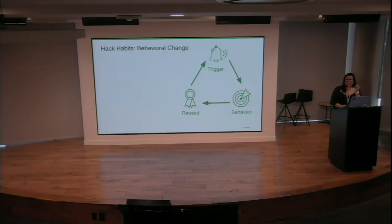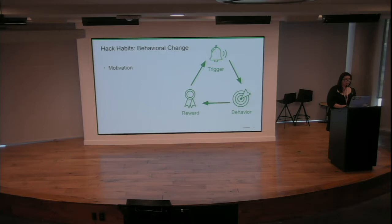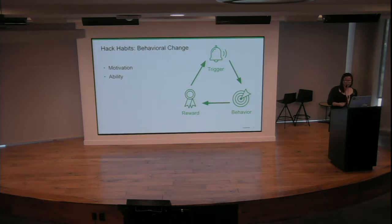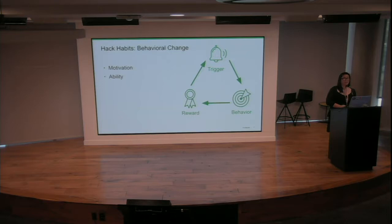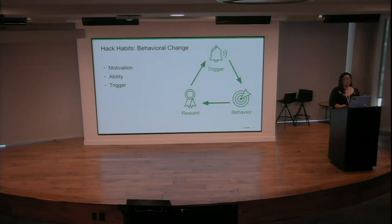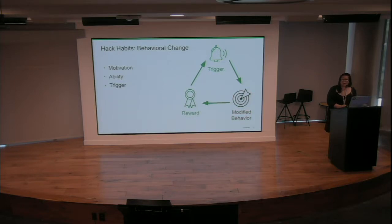If you want to incite behavioral change, you'll need three things. First is motivation — somebody must understand why the change is needed or how it will improve something. Second is ability — how easy is it to do? Are they able to complete the behavior? Do they have the time and resources to act on it? Finally, there's a trigger which exists in the feedback loop, serving as a reminder to act upon the behavior. Behavioral change can be enacted by replacing one part of the habit feedback loop or introducing an entirely new feedback loop altogether.